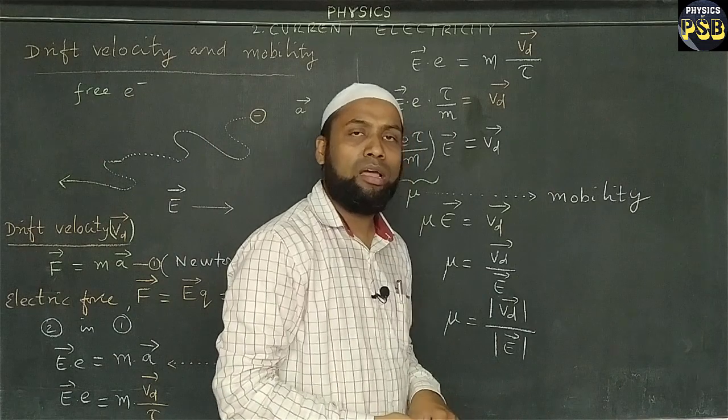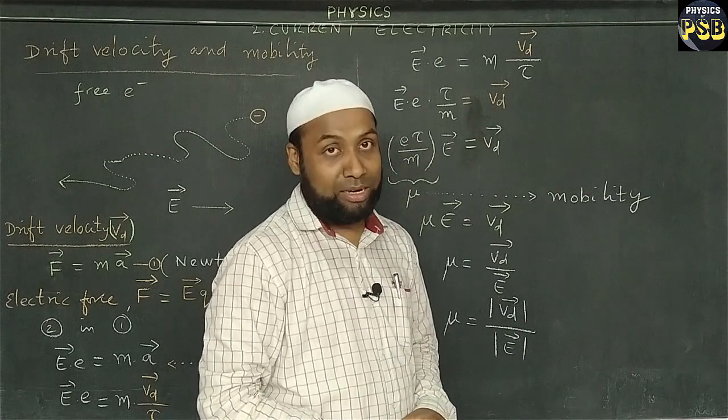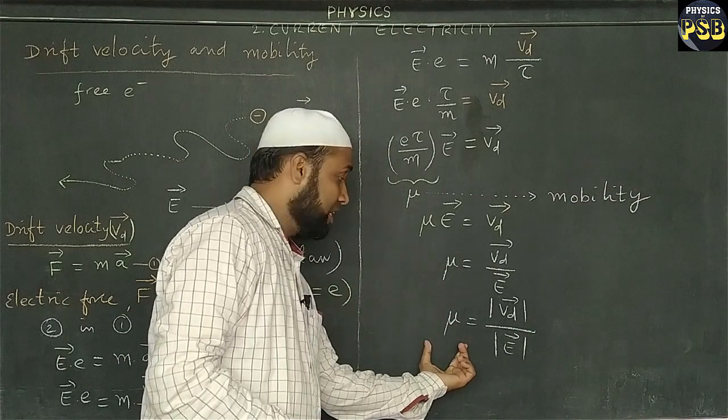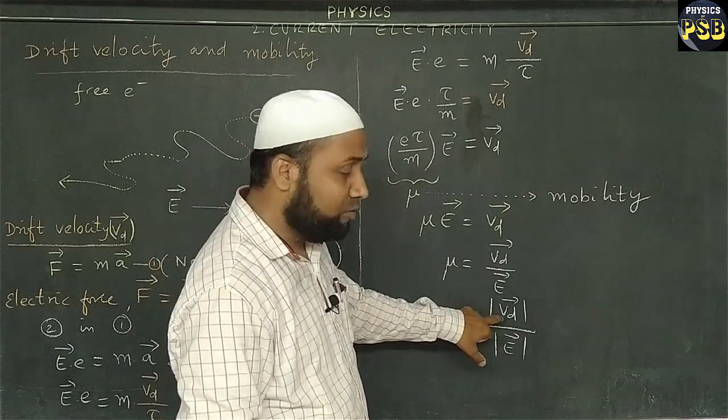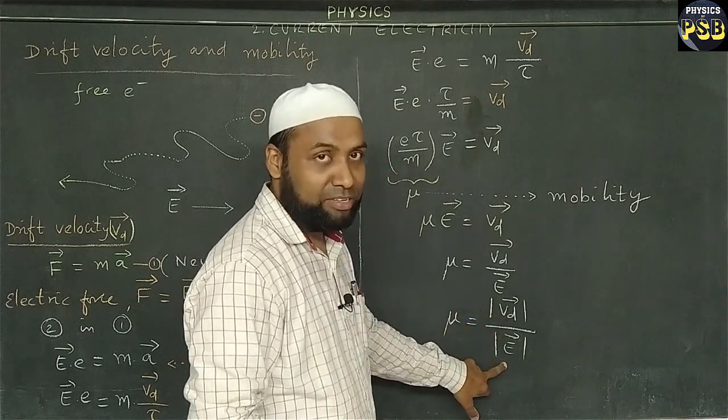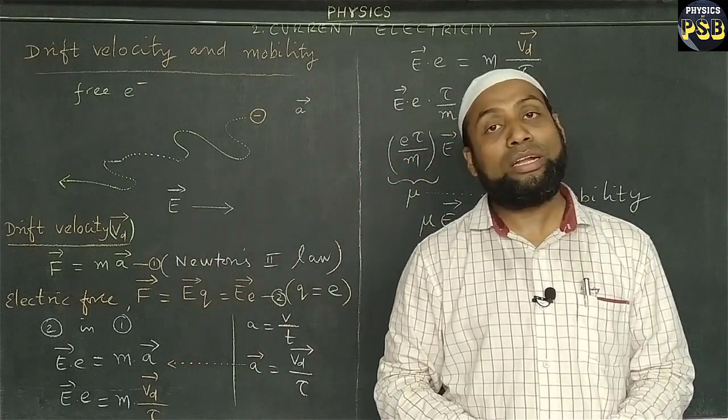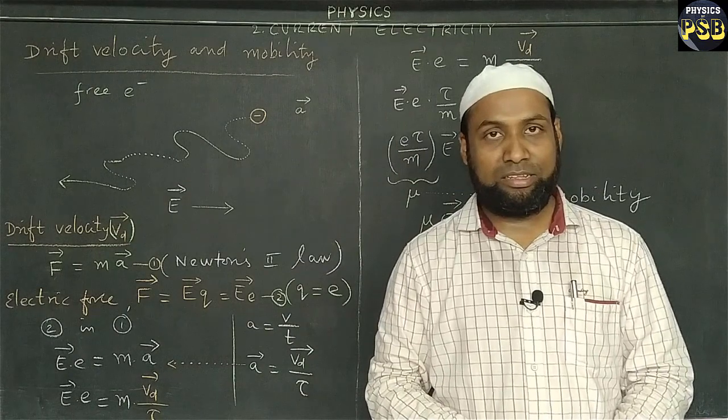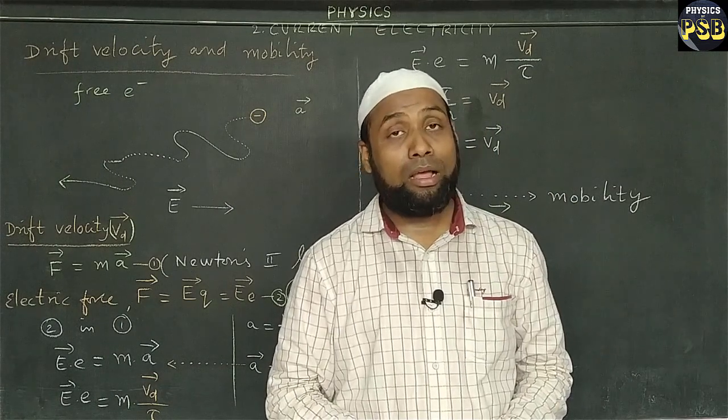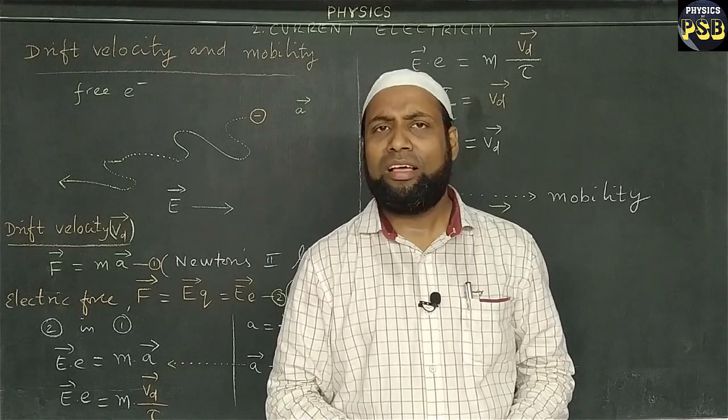mu equals to modulus of Vd vector upon modulus of E vector. Here when we take the modulus of any vector quantity, it gives the magnitude of that particular vector quantity. So mobility can be defined as the ratio of the magnitude of drift velocity and that of electric field. And in simple words, drift velocity acquired per unit electric field is referred to as mobility. Mobility has come from the word mobile, that means under motion.